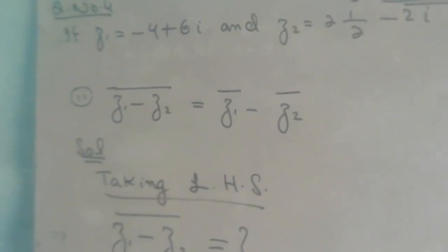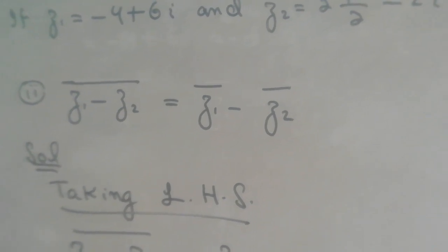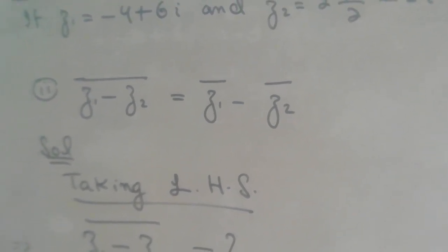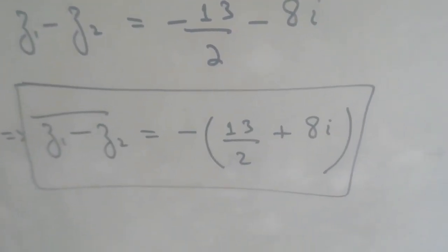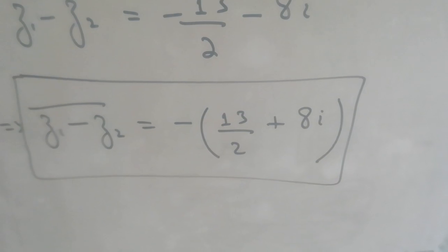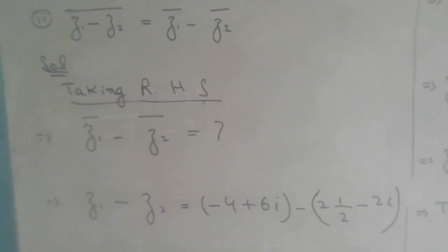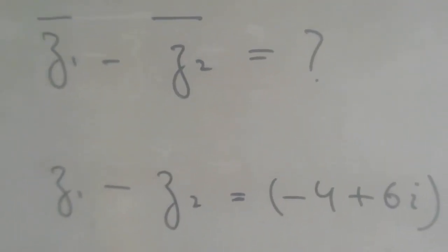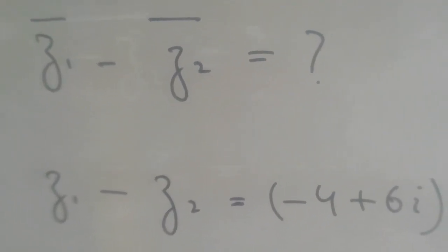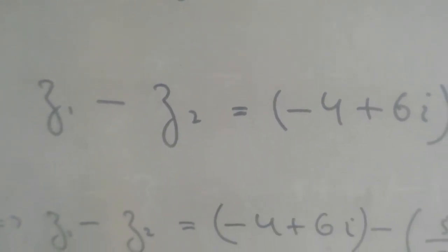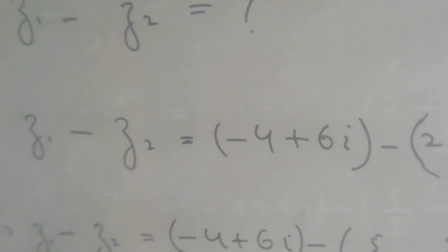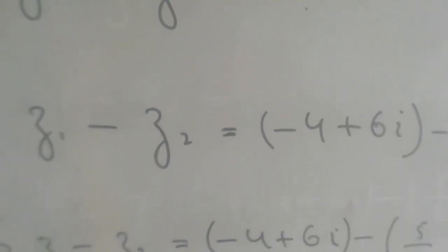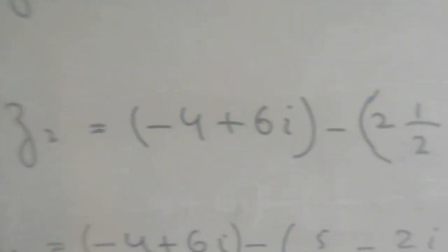Now students, I am taking the right hand side. The right hand side is conjugate of z1 minus conjugate of z2. I will remove the conjugate symbols individually and apply them to z1 and z2 separately.